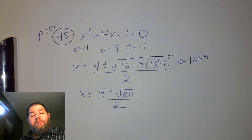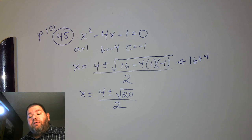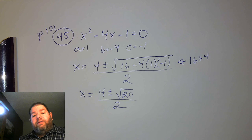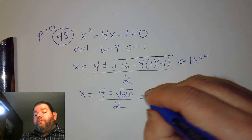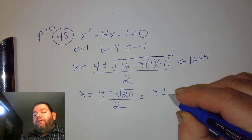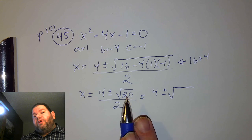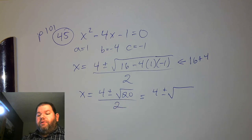That simplifies the expression under the radical. The next thing we have to do is simplify the radical itself. The square root of 20 — we want to split up this number so that it's a product of a perfect square and some other number.